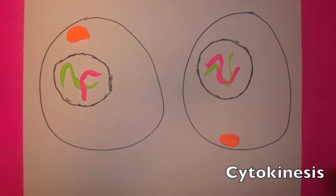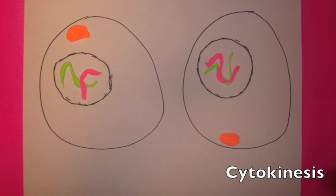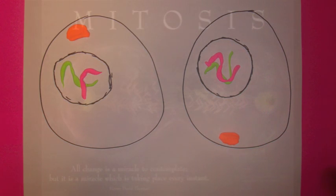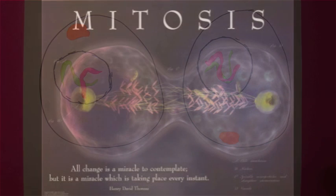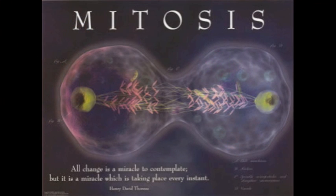Cytokinesis, which may begin before or after mitosis is completed, finally separates the daughter nuclei into two new individual daughter cells. At the end of mitosis, two distinct cells with identical genetic material are produced, each containing 46 chromosomes.